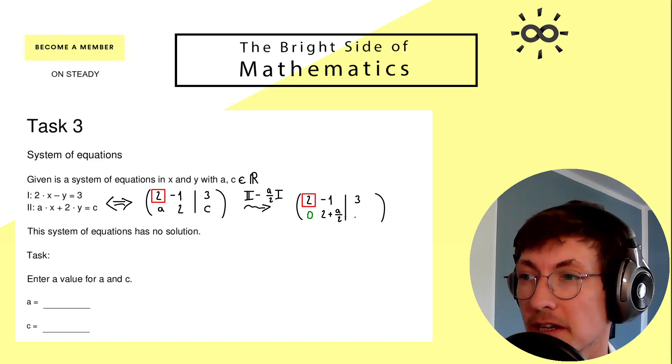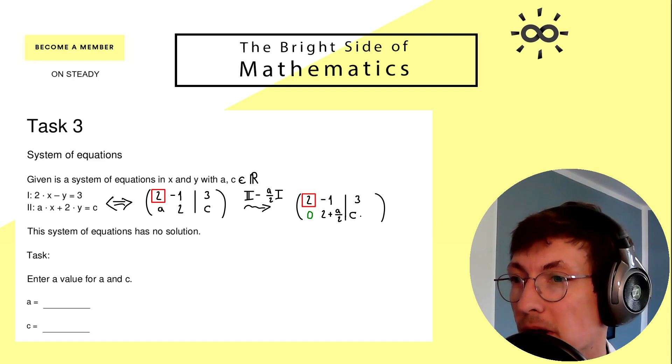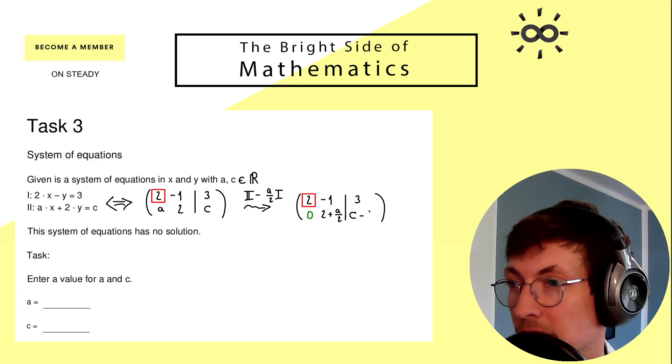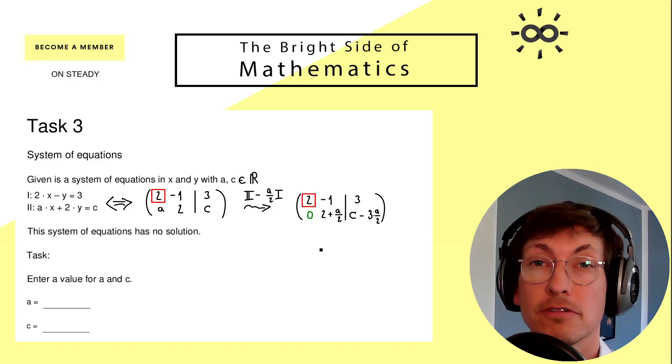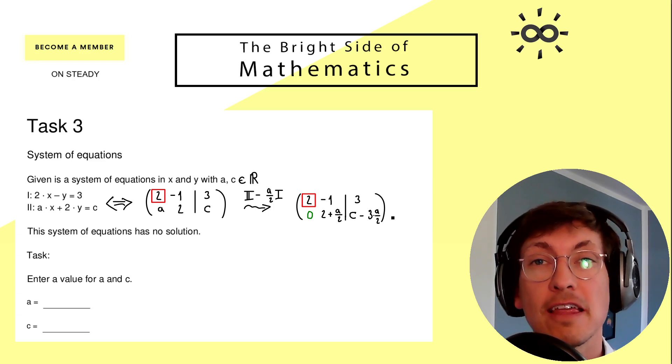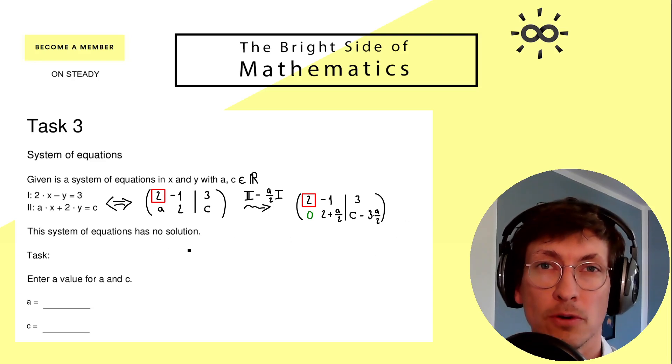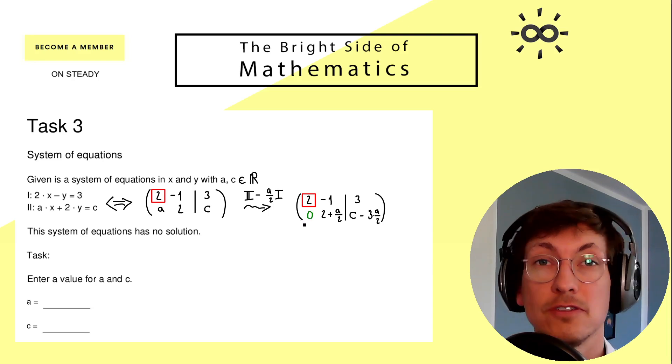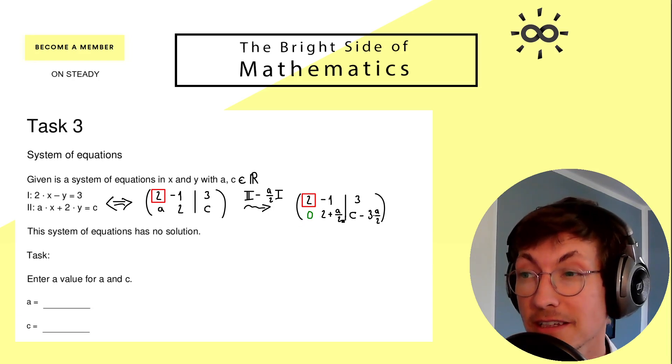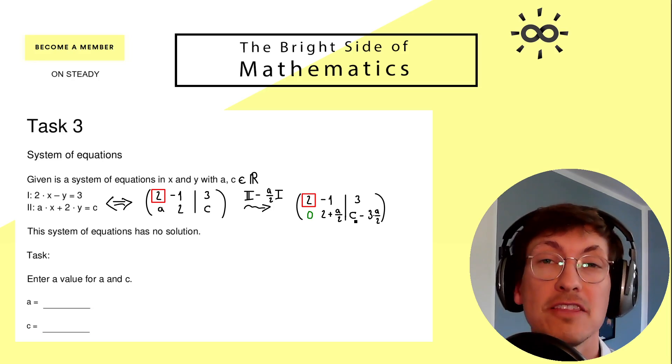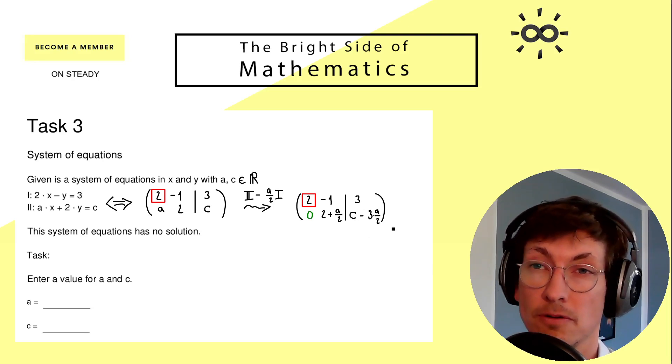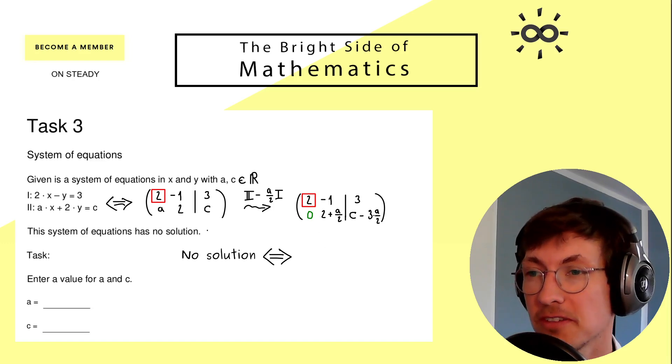And the two other numbers we just have to calculate. So here we have 2 + a/2, and here we have c - 3 times a/2. And now we have reached the row echelon form, and there we immediately see the condition we have for no solution at all: first, at the bottom we need to have a zero row on the left-hand side, and on the right-hand side a number which is not equal to zero.